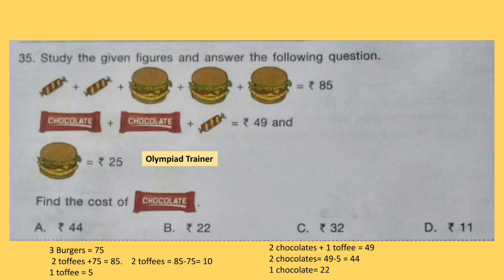Question 35. Study the given figures and answer the questions. One burger costs Rs. 25, so 3 burgers cost Rs. 75. Since 2 toffees plus 3 burgers equals Rs. 85, replacing 3 burgers with 75 gives 2 toffees equal to Rs. 10, so 1 toffee equals Rs. 5. Then, 2 chocolates plus 1 toffee equals Rs. 49. Replacing 1 toffee with Rs. 5 gives 2 chocolates equal to Rs. 44, so 1 chocolate equals Rs. 22. So option B is the answer.